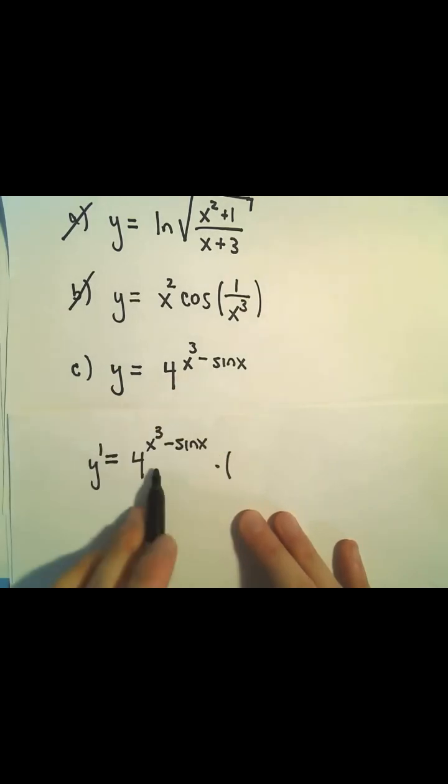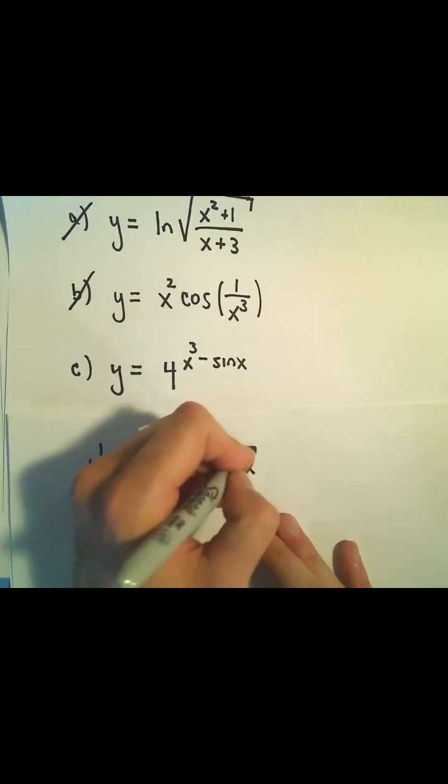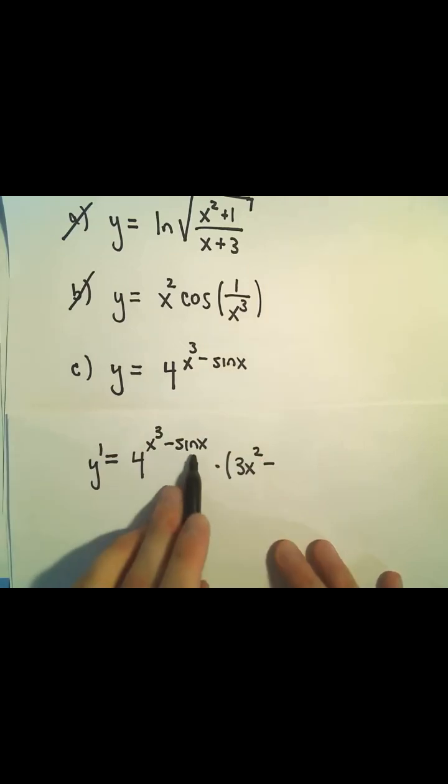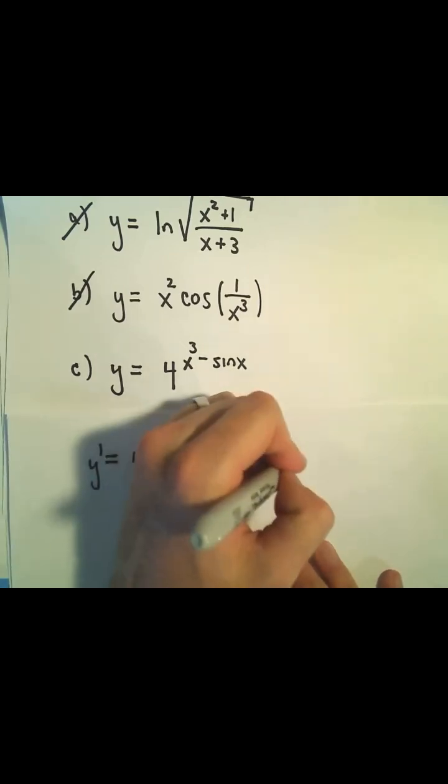Then we have to use the chain rule. We have to multiply by the derivative of the exponent. Well, the derivative of x³ is just 3x². The derivative of sin x is just cos x.